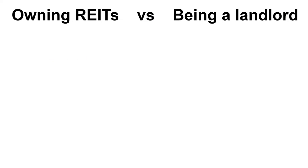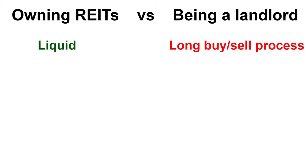Owning a REIT is in a way like owning a physical real estate and collecting the rent every single month, but with some advantages and disadvantages. The most important advantage of owning a REIT compared to owning a physical property is that REITs are highly liquid, which means you can buy and sell them almost immediately like a stock, while buying and selling real estate is a long and costly process.